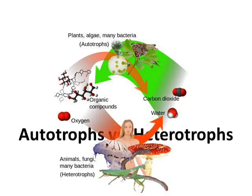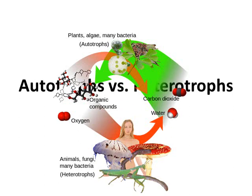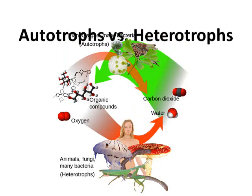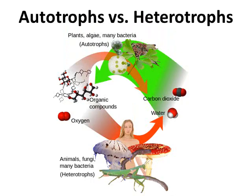The topic of this video is going to be some of the basic differences in how organisms get their energy. There are two broad categories of how organisms get their energy on Earth. Organisms are either called heterotrophs or autotrophs. All life needs energy, but how they get their energy is a little different from one another.